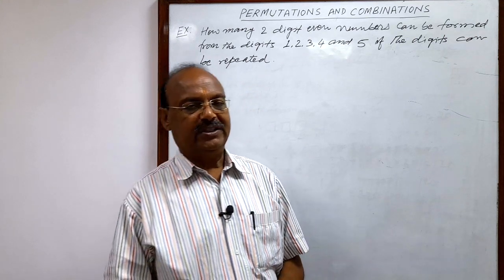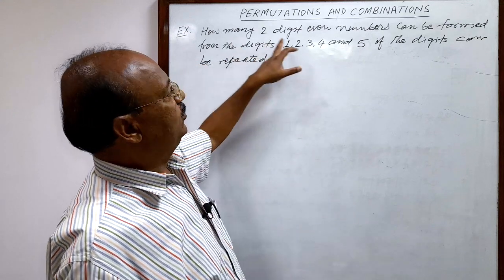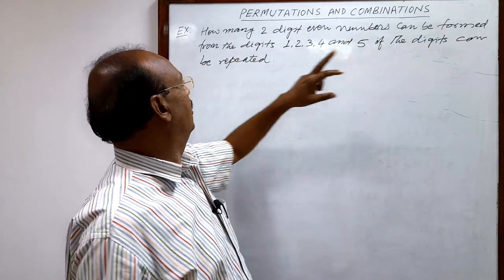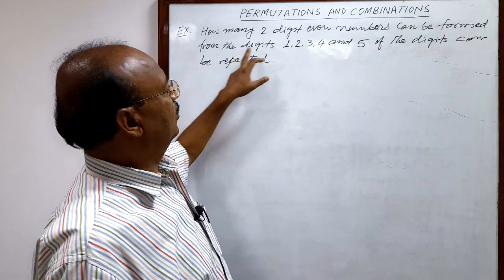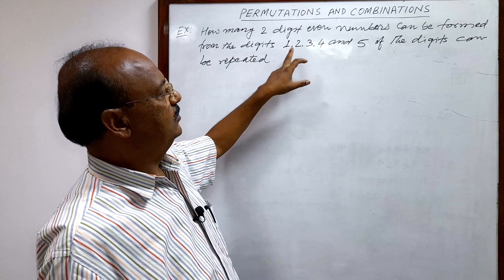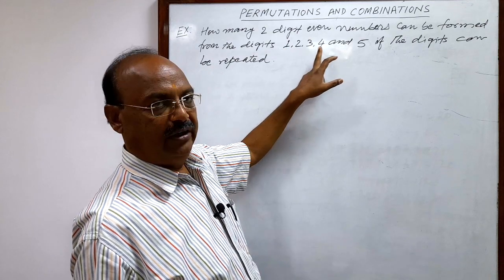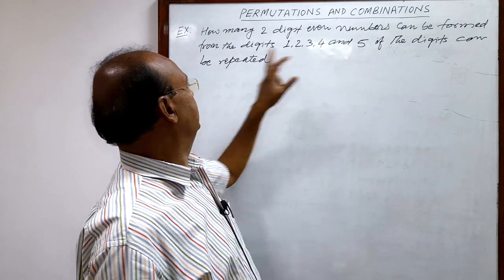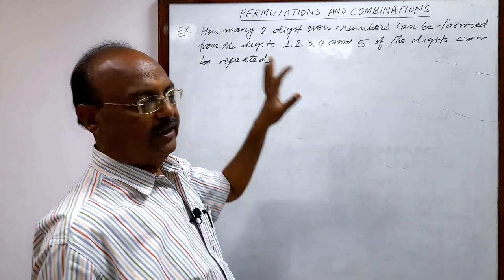Here the question is: how many two-digit even numbers can be formed from the digits 1, 2, 3, 4 and 5, if the digits can be repeated?